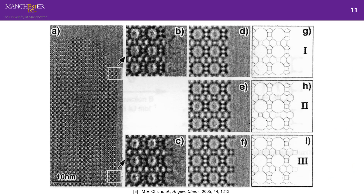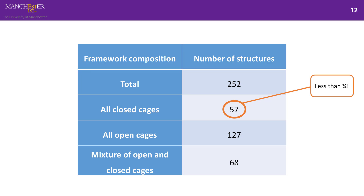The same thing was observed with transmission electron microscopy — terminations at the surface were also primarily Q3. However, less than one quarter of all known zeolite frameworks can be built using closed cages only, so we needed a better scheme encompassing closed cages and also open cages, which have some Q2 units but still represent the lowest energy structures that can be used to construct any known zeolite framework.